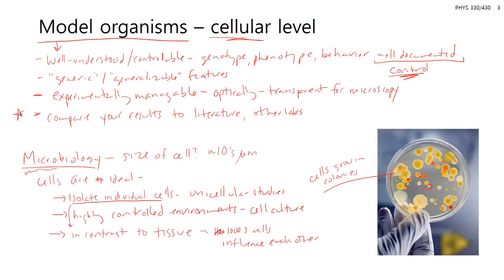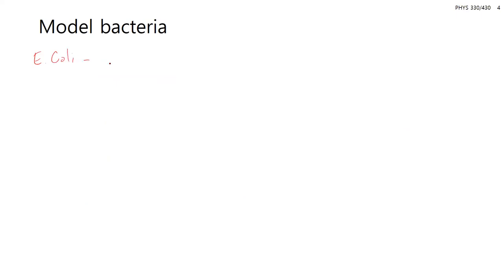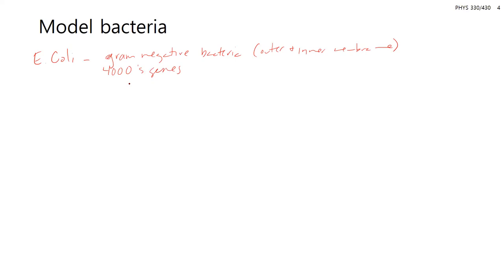To give perspective on common model organisms in the literature, let's walk through bacteria and then eukaryotic cells. The most common model bacterium is E. coli — useful if you want to study gram-negative bacteria, which means it has an outer and inner membrane. It has a somewhat limited genome of about 4,000 genes, all categorized and understood.